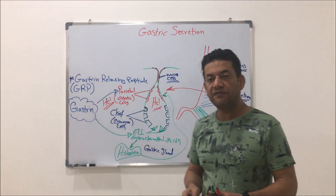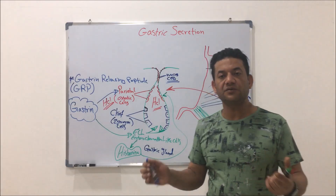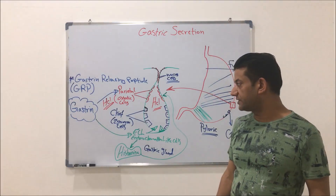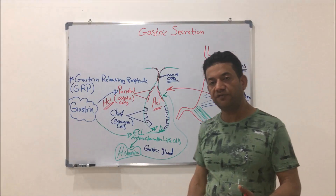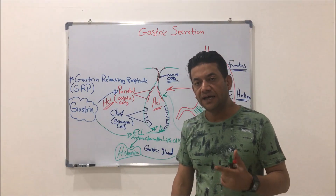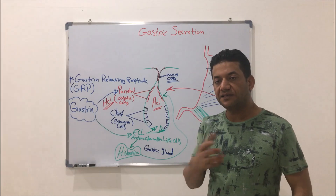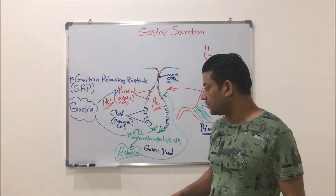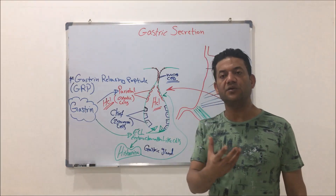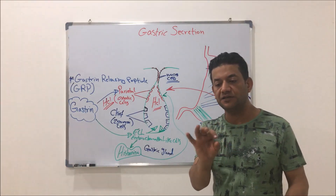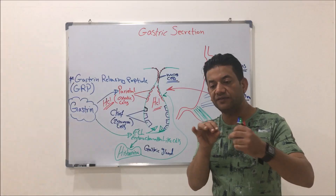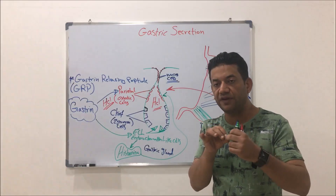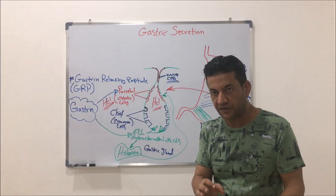We have the third important factor. The third factor is acetylcholine. Acetylcholine is released from nerve endings of the vagus nerve.